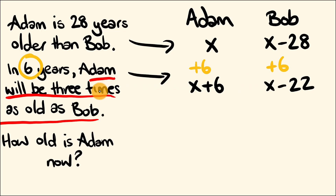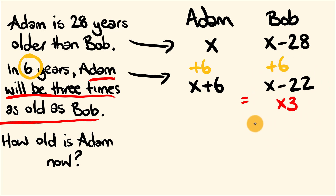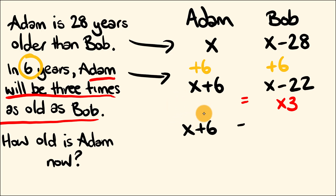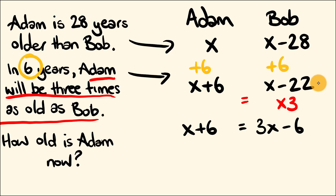At that stage, Adam will be three times as old as Bob. To make this equivalent, we need to multiply Bob's age by three. So: x plus six equals three times (x minus 22), which gives us x plus six equals three x minus 66. That's our equation — all the information is now in there.